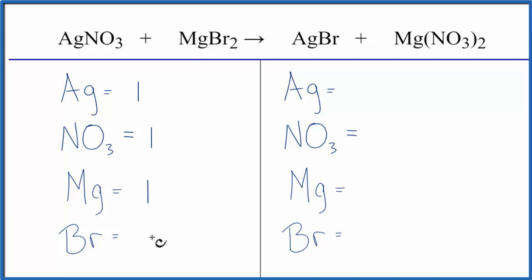I have one Mg and two Brs. On the product side, I have one silver, two of these nitrates, one Mg, and one Br.